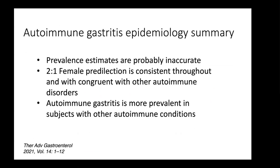However, studies consistently show a two-to-one female predilection, congruent with other autoimmune disorders. It's also fairly consistent that patients who have other autoimmune conditions are more likely to develop autoimmune gastritis — particularly autoimmune thyroid disease and type 1 diabetes. Conditions like celiac disease have controversial data; in some studies there seems to be a correlation, in others there isn't, so the verdict is still out.